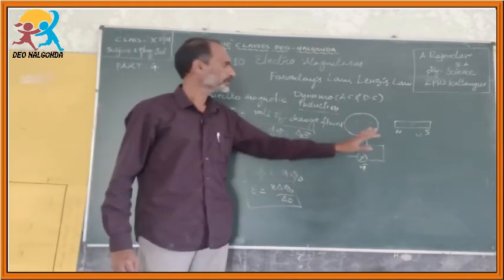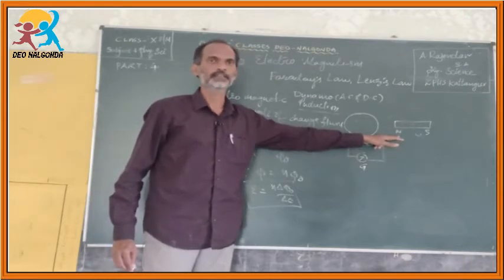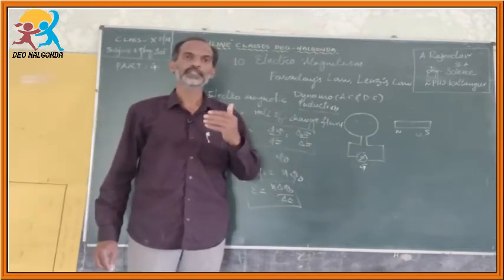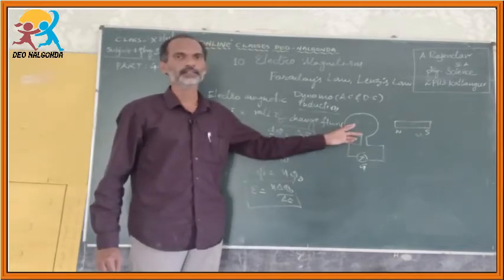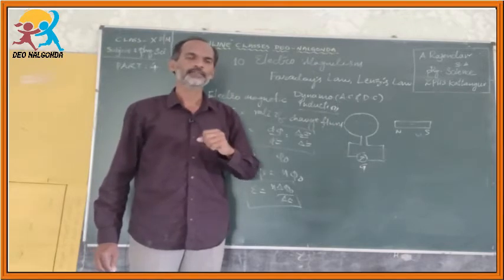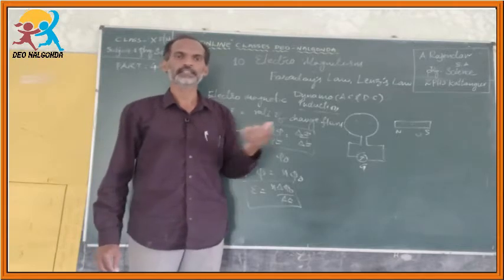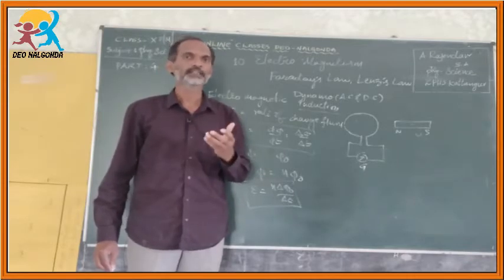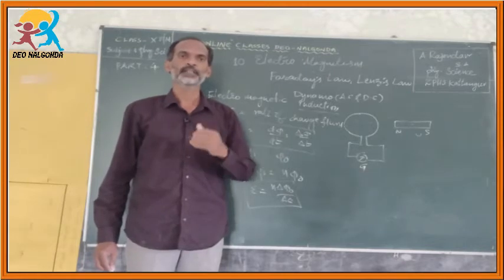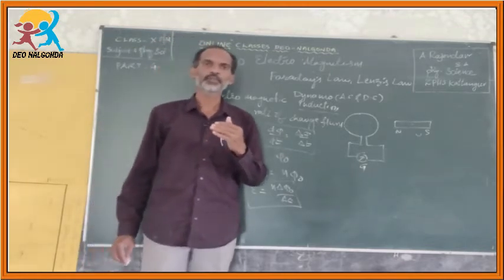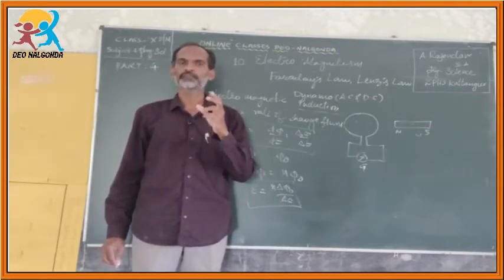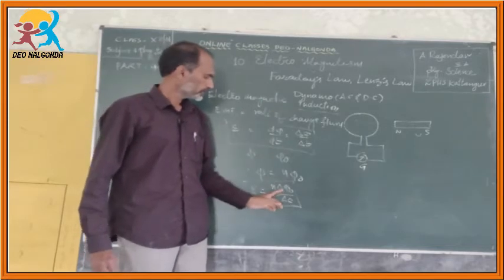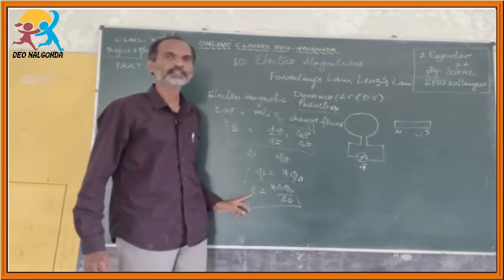According to Faraday's law, where there is a change in the magnetic flux, there will be induction of electric current produced in the coil. So far we have discussed that the change in magnetic flux induces electric current in the coil. But we haven't discussed the direction in which the electric current is produced. According to Faraday, change in the flux creates the induced electromotive force, and due to this induced EMF there will be electric current.